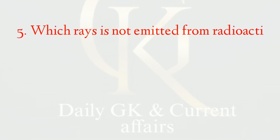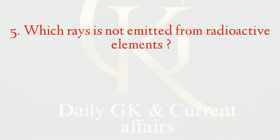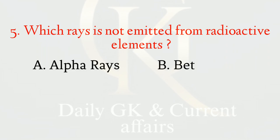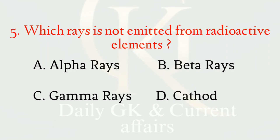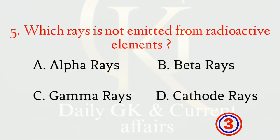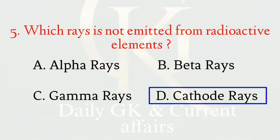Which rays are not emitted from radioactive elements? The correct option is d: cathode rays.